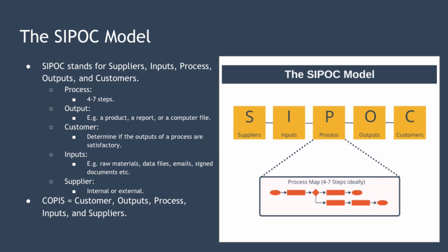First we have Process, and this is the most important part of a SIPOC diagram because the whole diagram is based upon it. A process is simply a set of activities that take one or more inputs from one or more suppliers and turn them into one or more outputs that will be used by one or more customers. Your aim in this section is to describe or draw the process using no more than four to seven steps, which forces you and your team to zoom out from the detail and consider only the big picture.